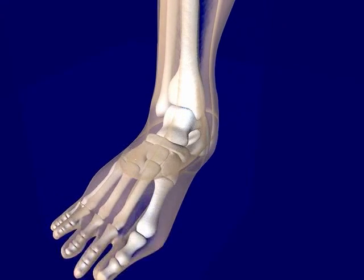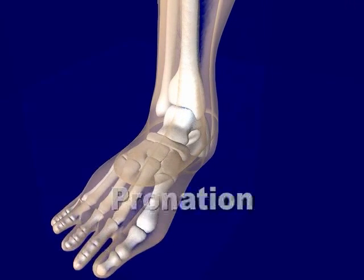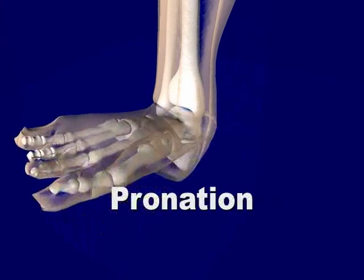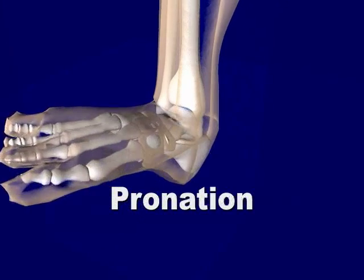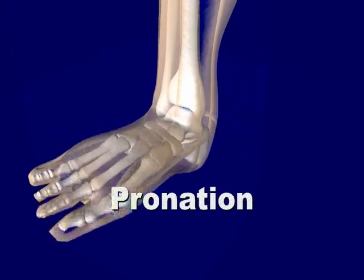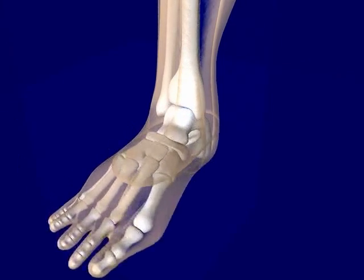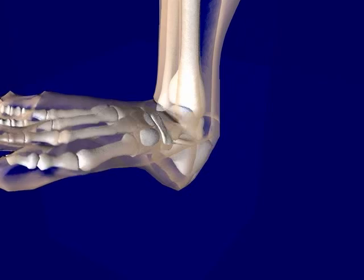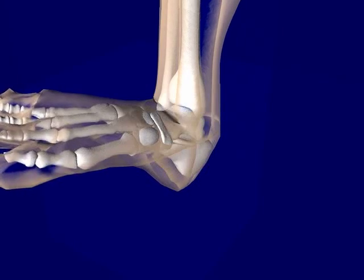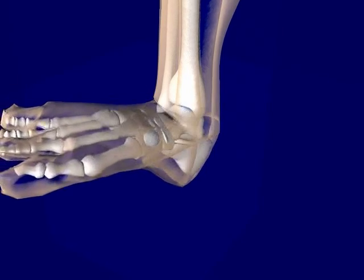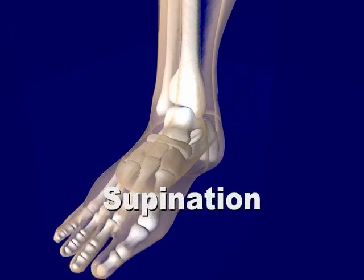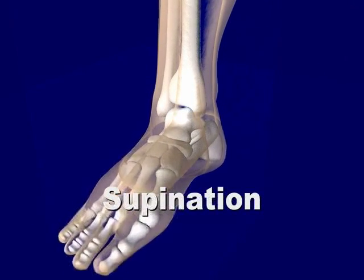Pronation is a motion of the foot which is comprised of eversion, dorsiflexion, and abduction. With this, the foot is seen to move toward the anterior leg, while the toes and plantar surface move away from the midline.